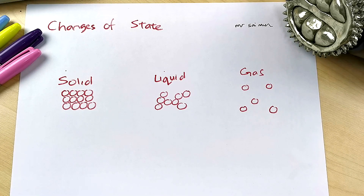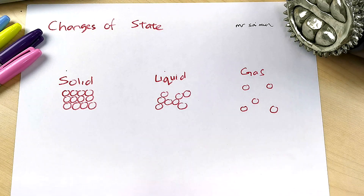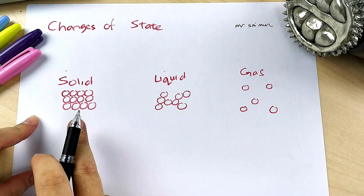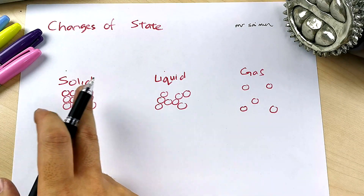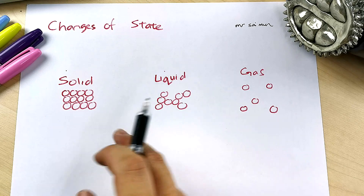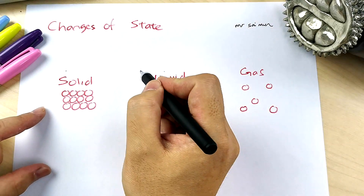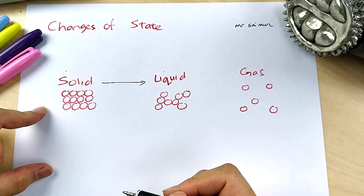Let's move on to changes of state. They like to ask simple questions like this: solid, liquid, and gas. Observe the structure — if they ask you to draw the arrangement, make sure it's right, like this: solid, liquid, and gas.